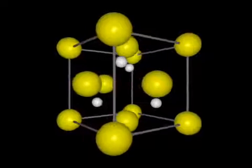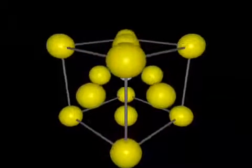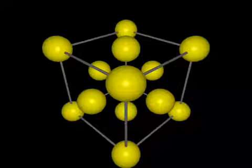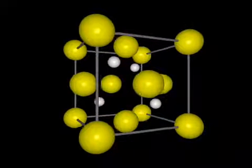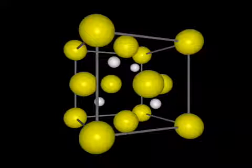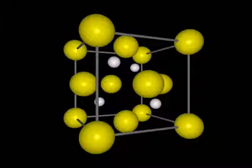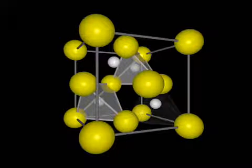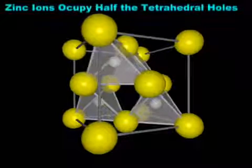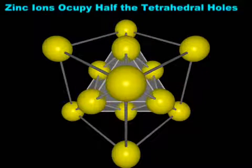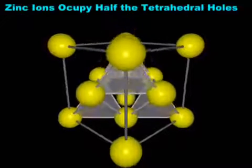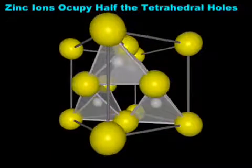A third ionic structure, based upon a face-centered cubic lattice, is the sphalerite structure. Sphalerite is the cubic form of the mineral zinc sulfide. In the sphalerite structure, the relatively large sulfide ions, represented here by the yellow spheres, form a face-centered cubic array. The zinc ions occupy the tetrahedral holes. Each zinc ion lies at the center of a tetrahedron of sulfide ions. However, since an array of N close-packed ions gives two N tetrahedral holes, and since there is one zinc ion for every sulfide ion, only half of the tetrahedral holes are filled.